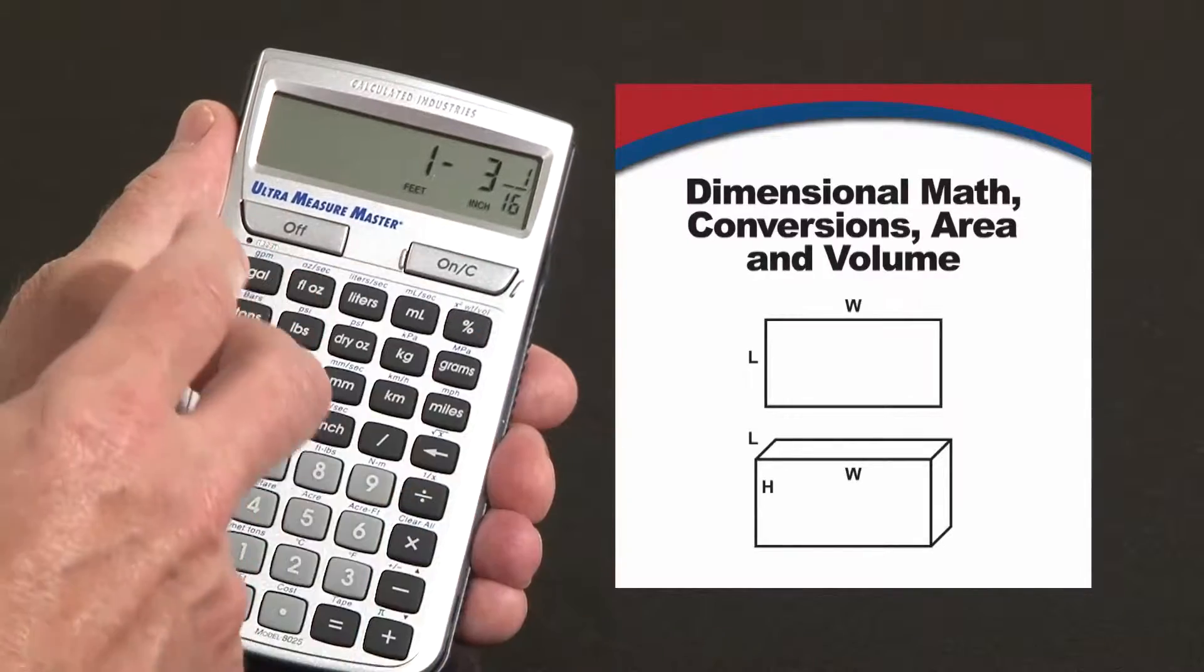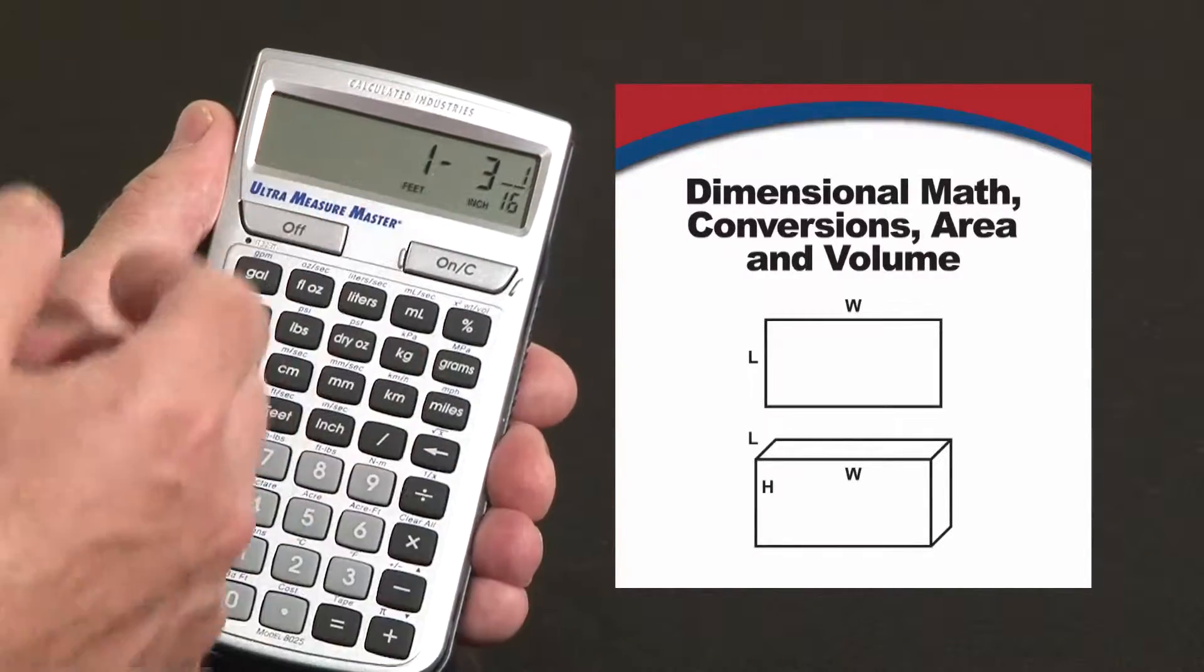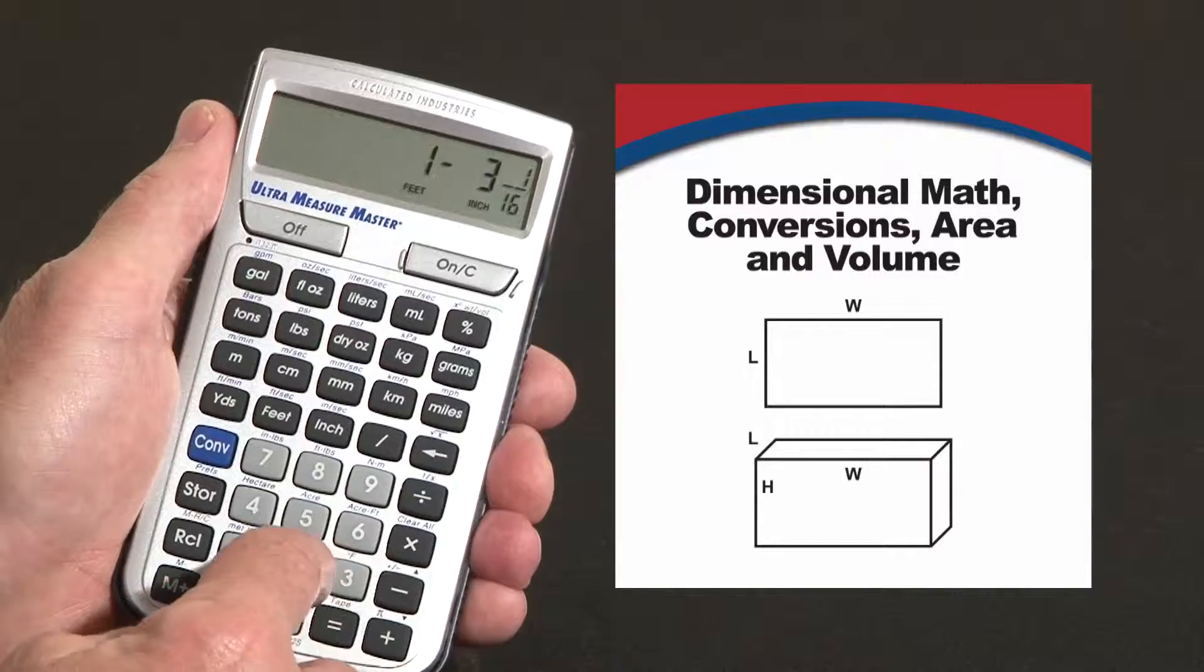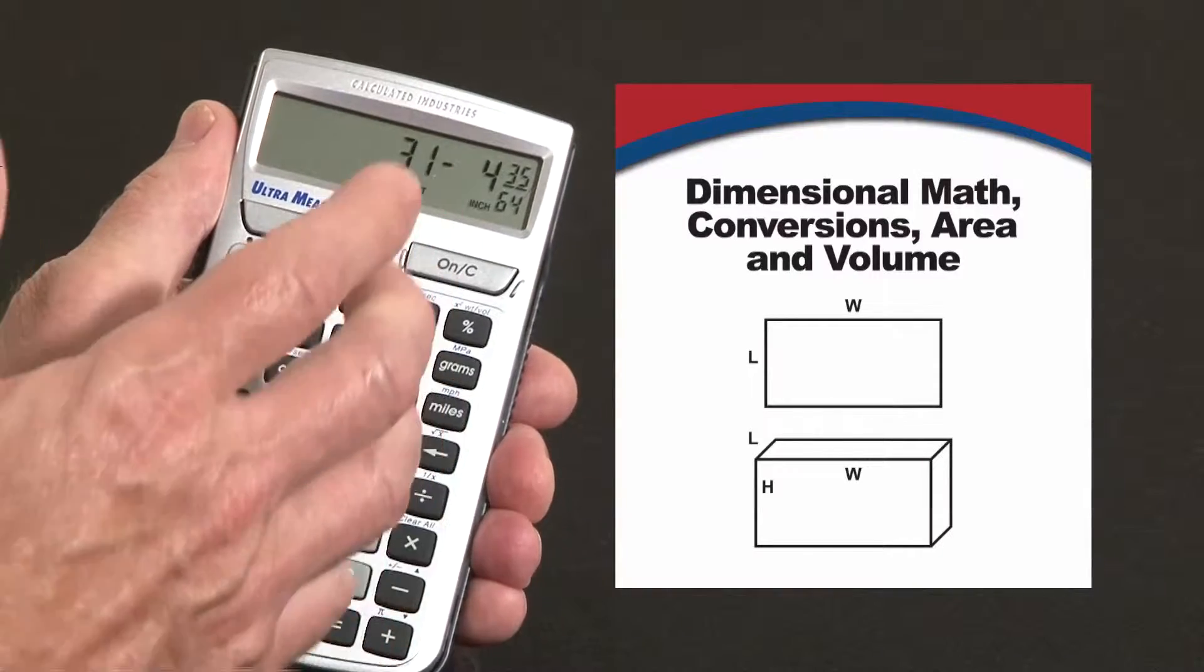You can add, subtract, multiply or divide this. Say this is an increment you want to multiply 25 times - times 25 gives you a larger number.